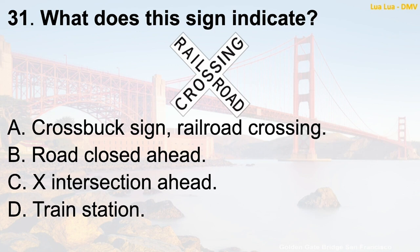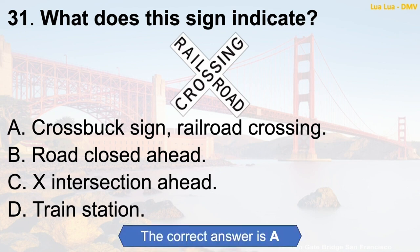Question 31: What does this sign indicate? A. Cross buck sign — railroad crossing. B. Road closed ahead. C. X intersection ahead. D. Train station. The correct answer is A: Cross buck sign — railroad crossing.